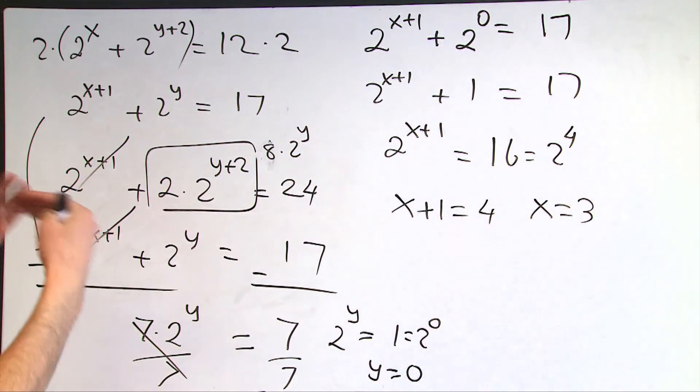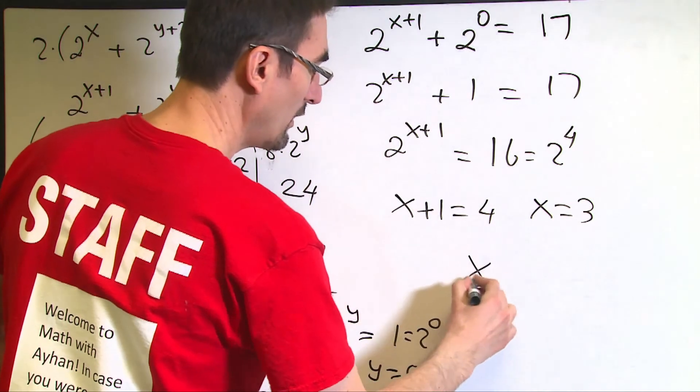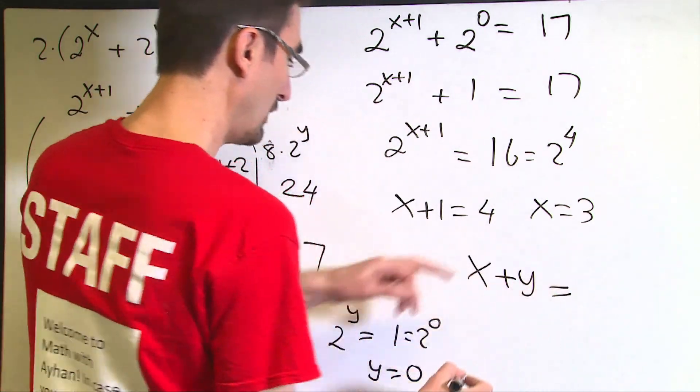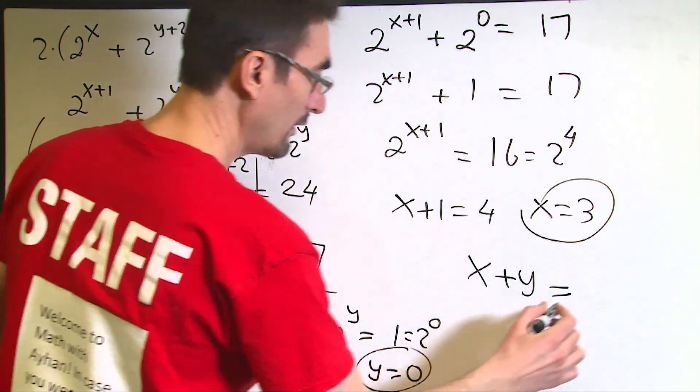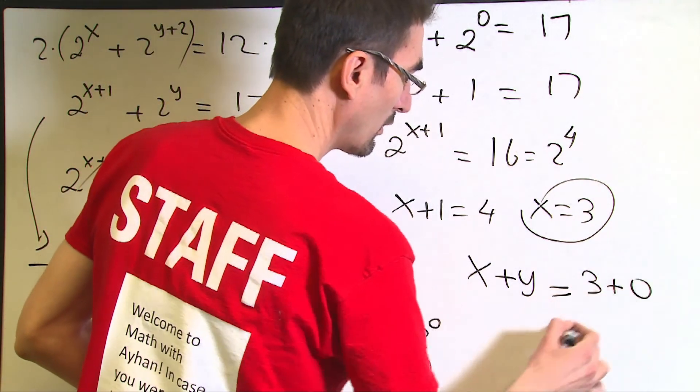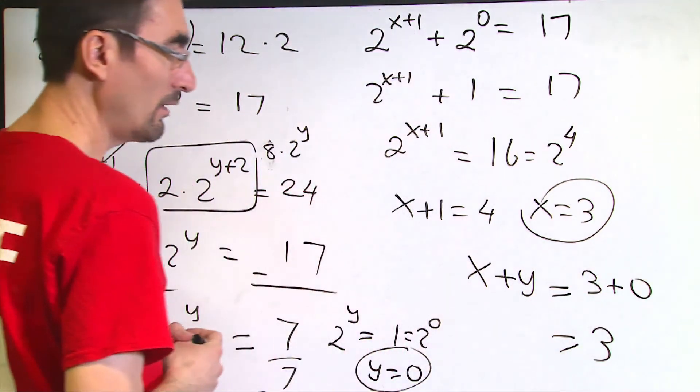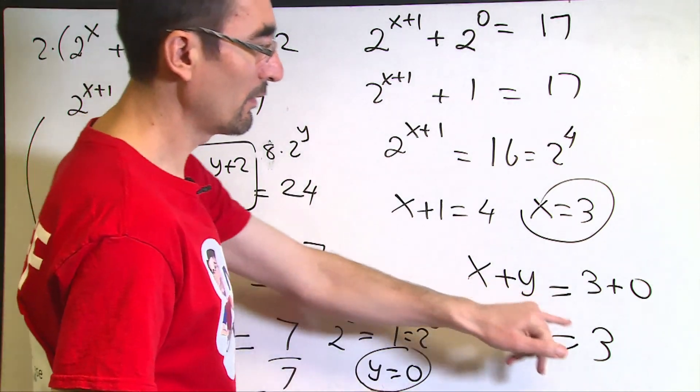So the question is asking me what x plus y is. x plus y will equal 3 plus y equals 0. The final answer is going to equal x plus y is 3.